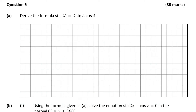Question 5, which is a 30-mark question on trigonometry. Part A of the question is worth 5 marks, and it wants us to derive the formula sine 2a is equal to 2 sine a cos a. Whenever you see a question like this, where we're asked to derive a formula involving the trigonometric ratios, I'd always go to page 14 or page 15 of my formula and tables book, as this is always going to be a massive help.